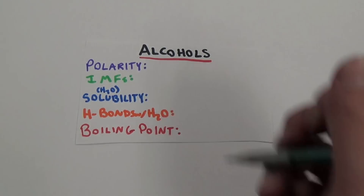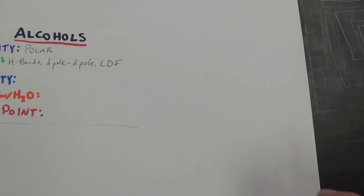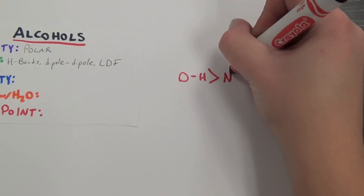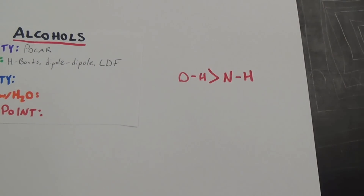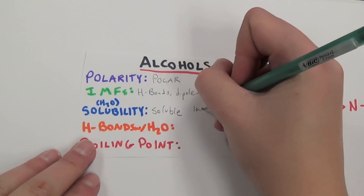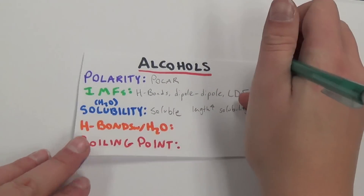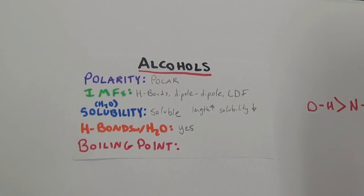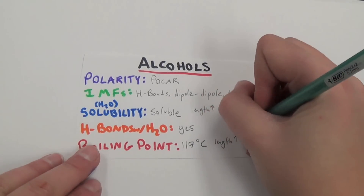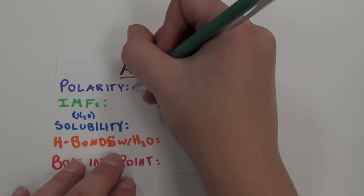Continuing down our list, we find alcohols. Similar to amines in that they are able to hydrogen bond to themselves, alcohols are actually more polar because the oxygen-hydrogen bond has a greater electronegativity difference than the nitrogen-hydrogen bond. As usual, alcohols are soluble in water, with shorter chains being completely miscible and solubility decreasing as the length increases. They have a boiling point of about 117 degrees Celsius, which increases as length increases.